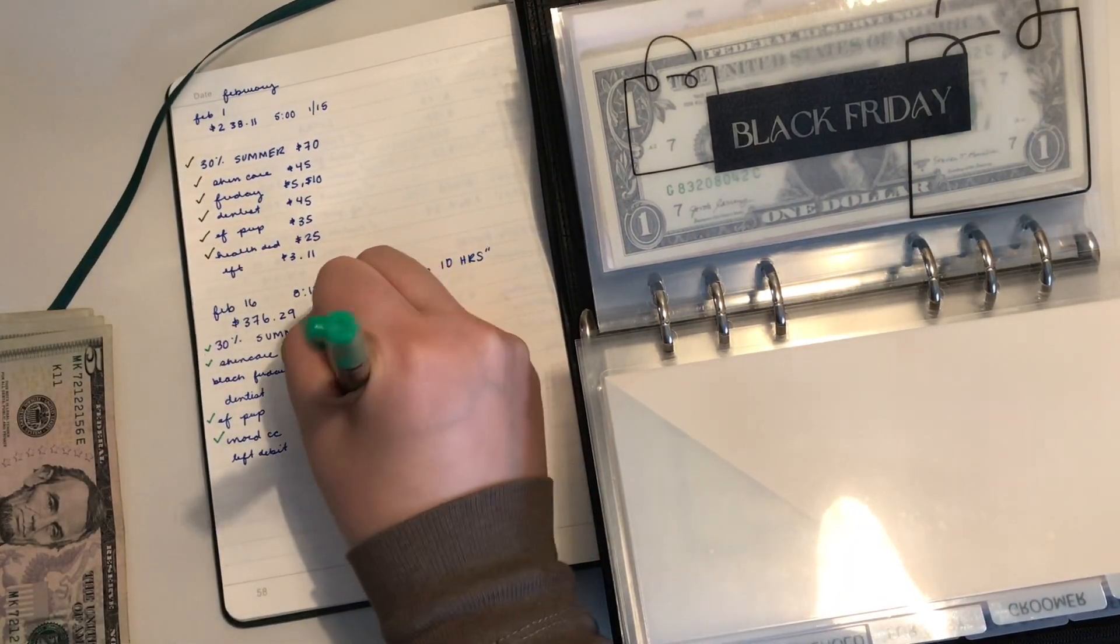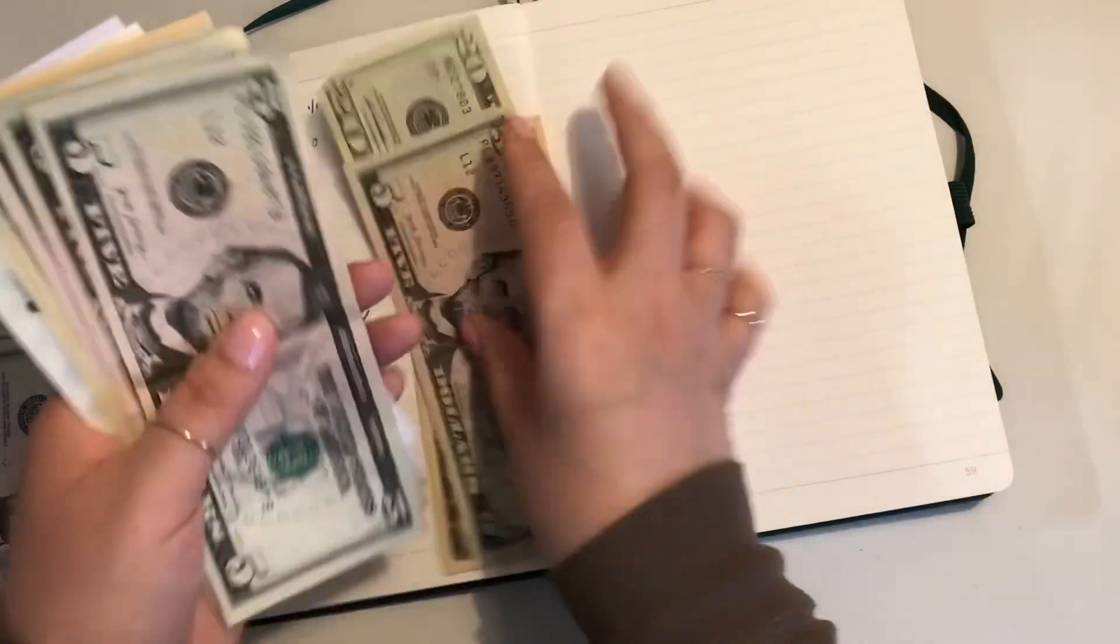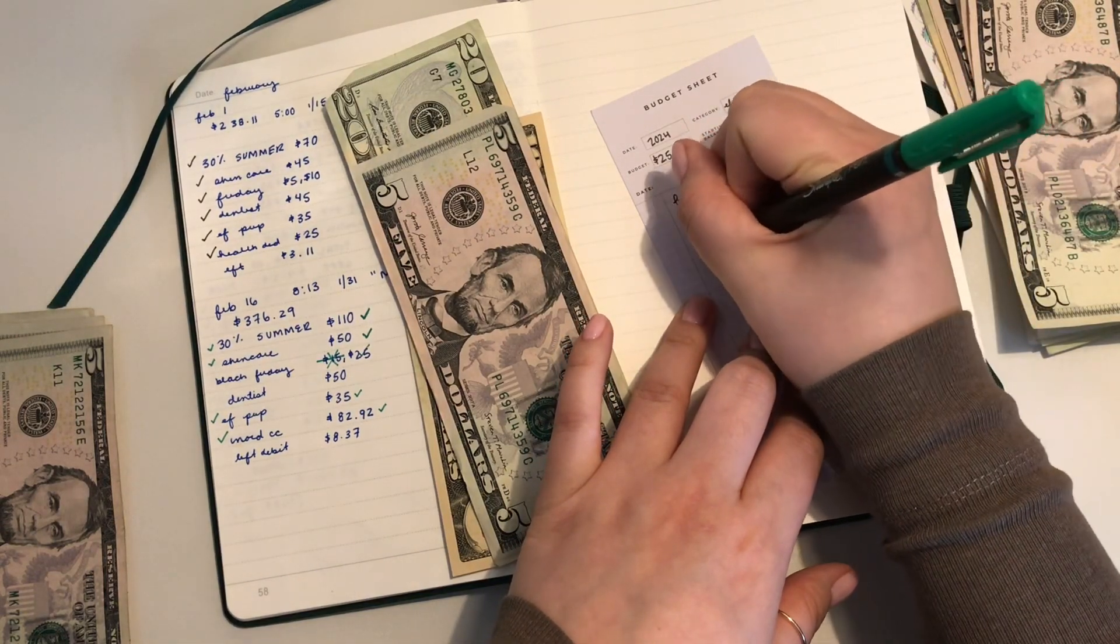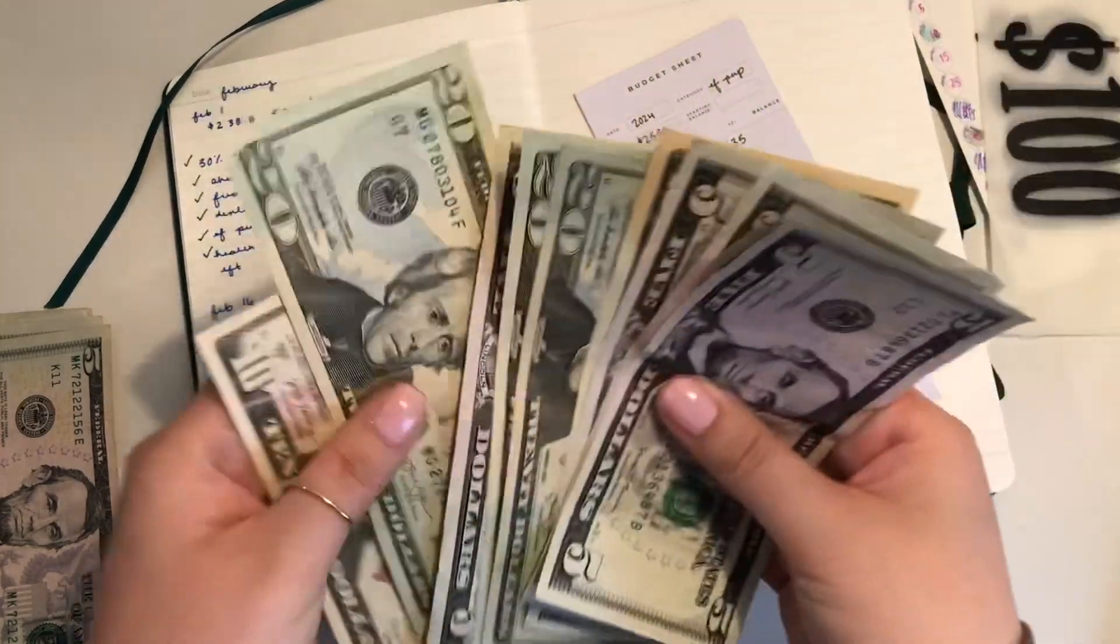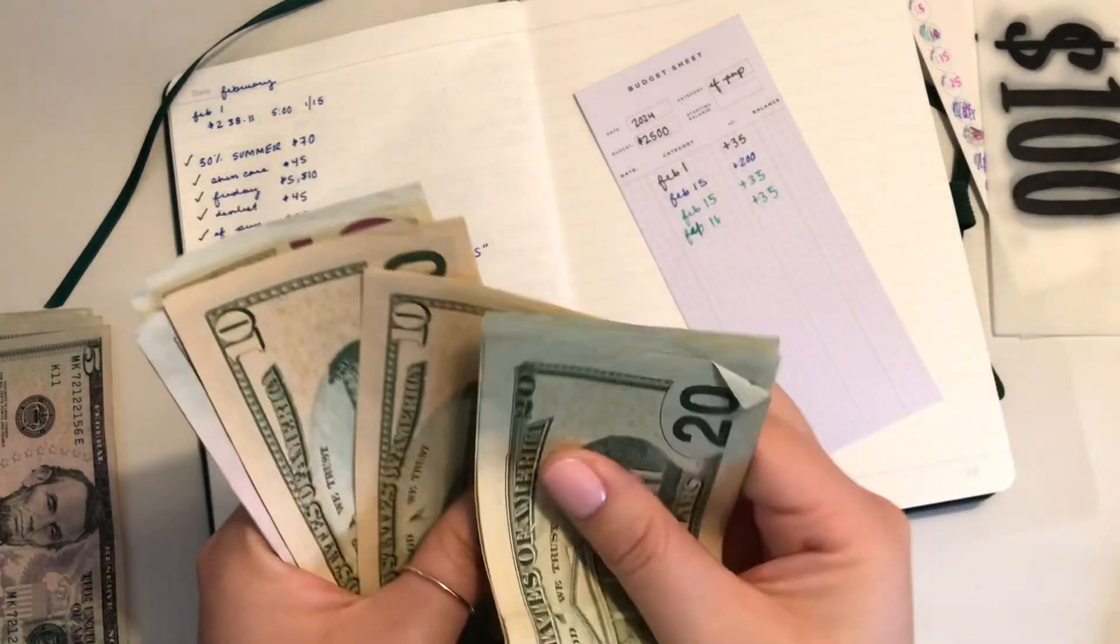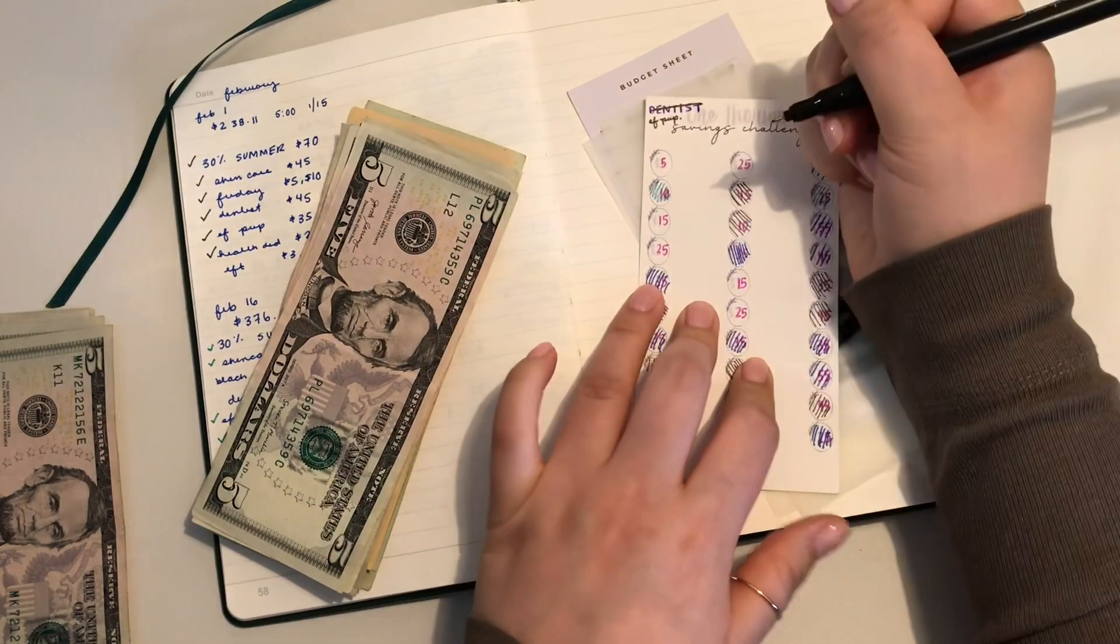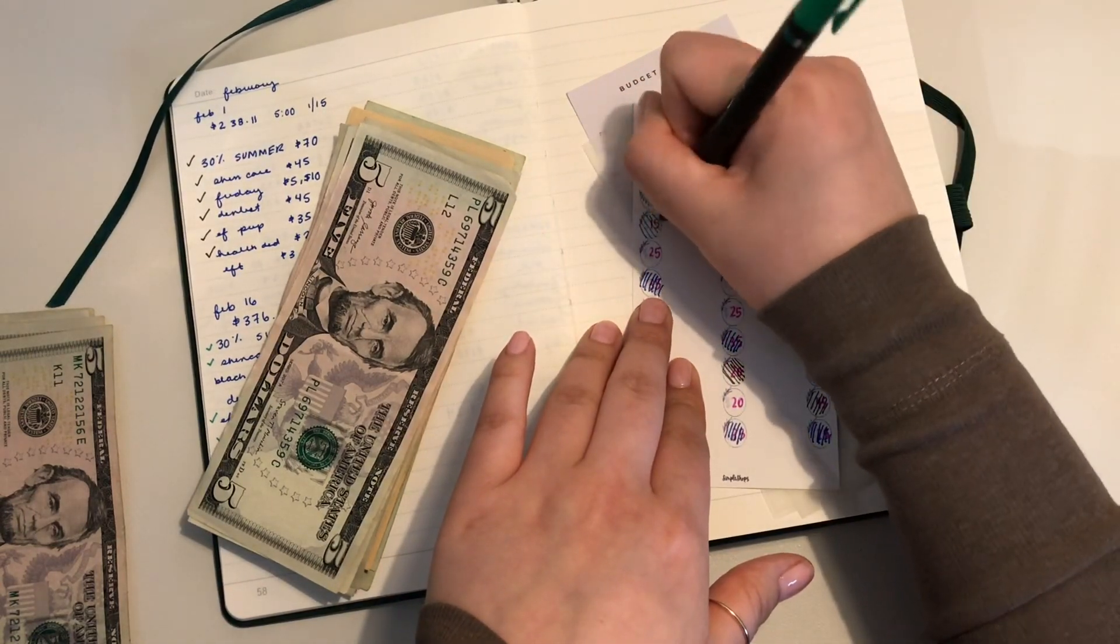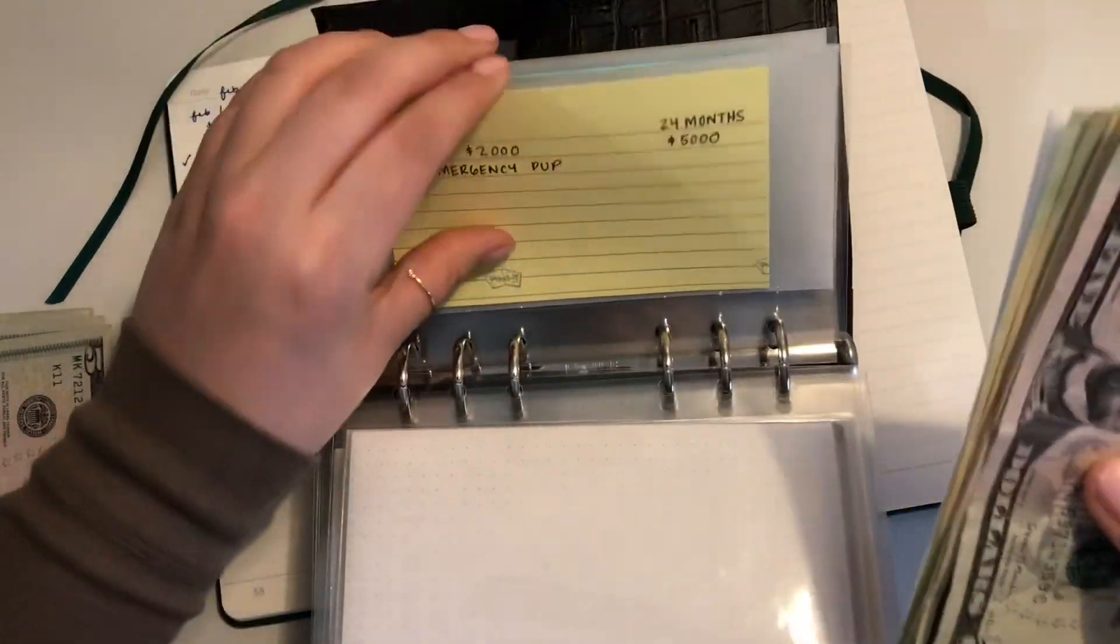I feel like emergency fund pup, I want to put $35. Emergency fund pup is going to get $35. Let me write it down here. We have enough to condense. We have $100. Perfect.